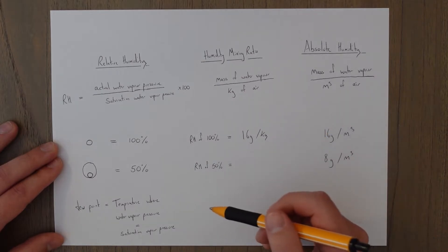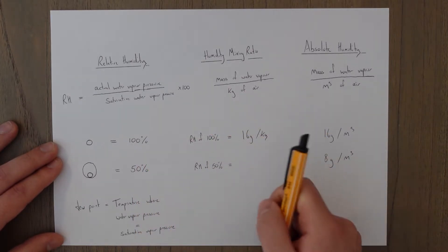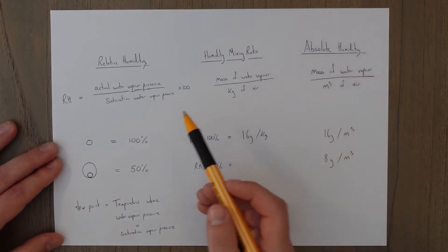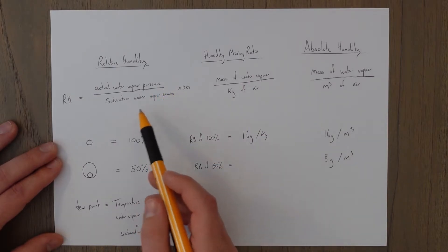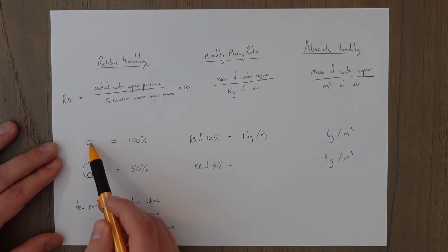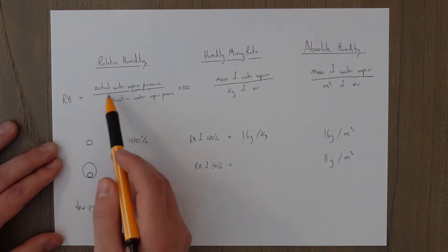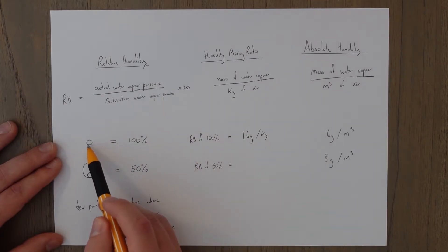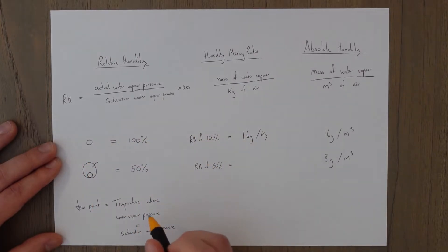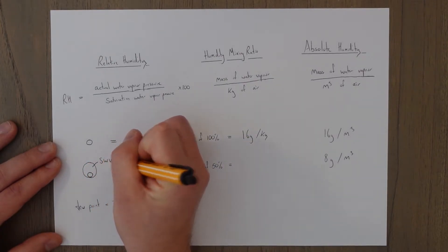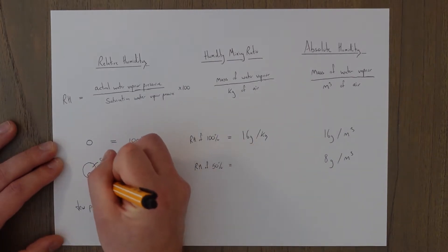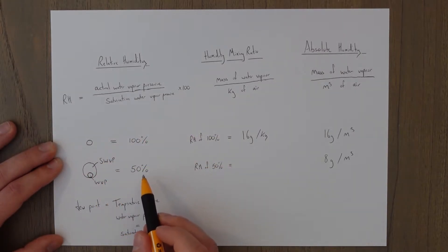As it gets hotter the saturation vapor pressure goes up — we can hold more water in the air. So if we have the same actual vapor pressure but the air gets warmer, the relative humidity will change. Think about it this way: at 100% the actual water vapor pressure and the saturation water vapor pressure are equal. But as we get warmer, the saturation water vapor pressure increases while the actual water vapor pressure remains the same, so our relative humidity goes down.